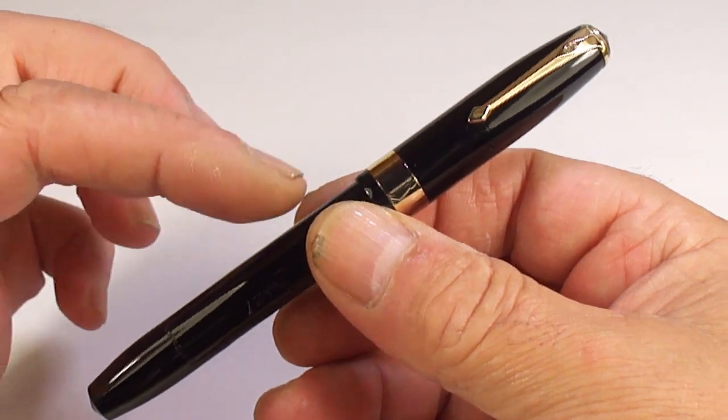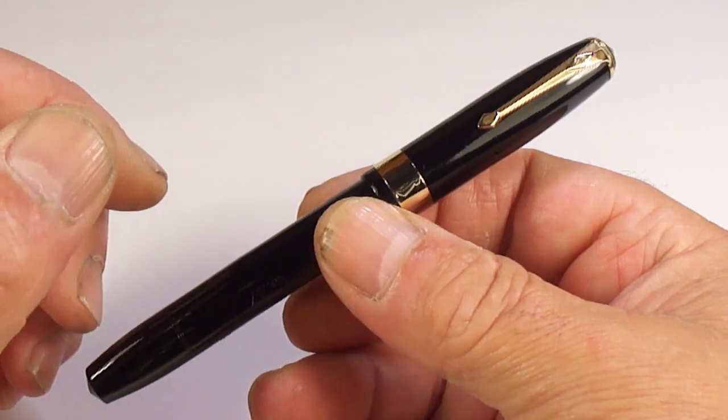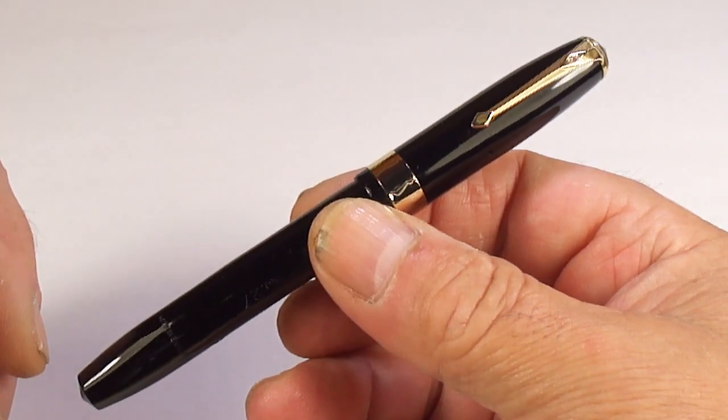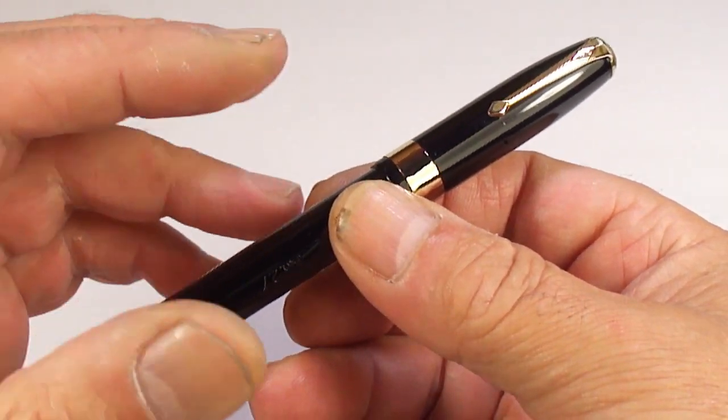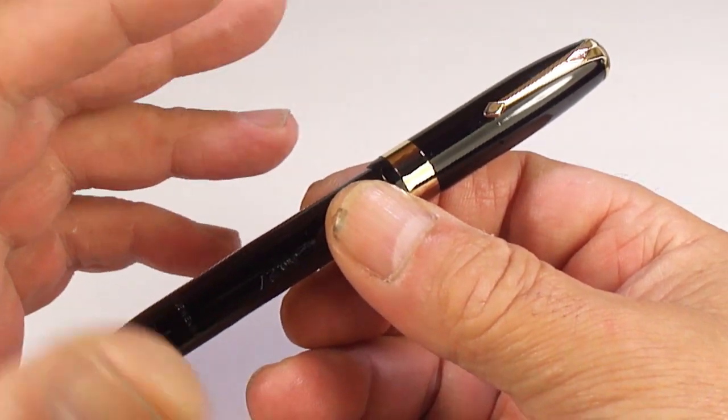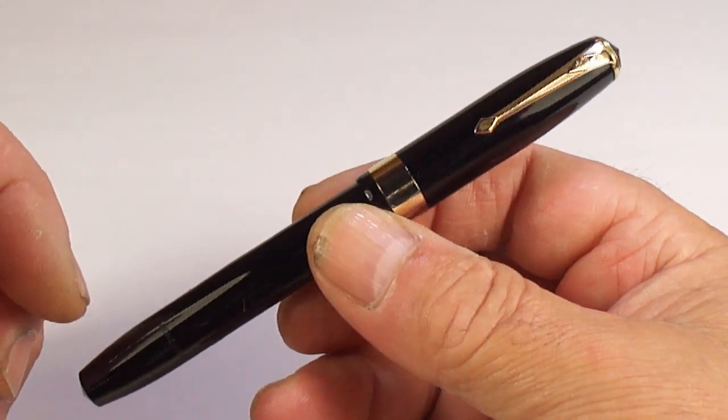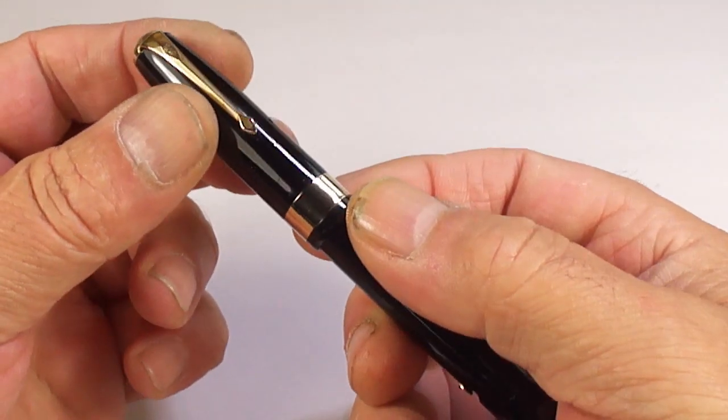The number 27 fountain pen in the Conway Stewart range of the period came in many different colors, some very desirable hatch patterns, some very desirable patterns such as the tiger eye.